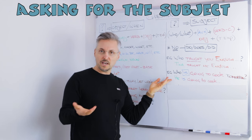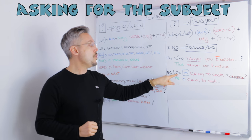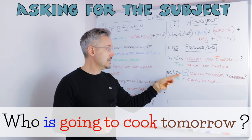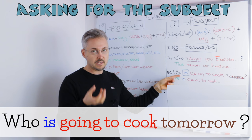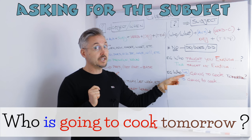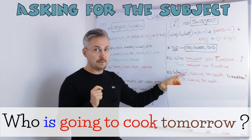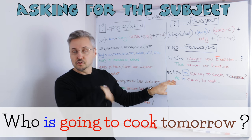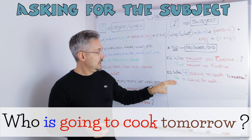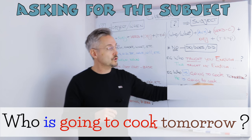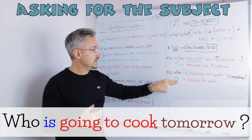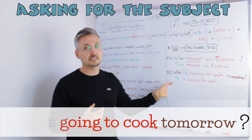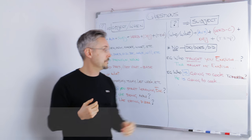Let me give you another example with an auxiliary. Who is going to cook tomorrow? Here we are asking for the person — the subject — but we need the auxiliary 'to be.' The answer could be: John, Peter, or he is going to cook tomorrow. In this case we need the auxiliary because it's not do, does, or did.